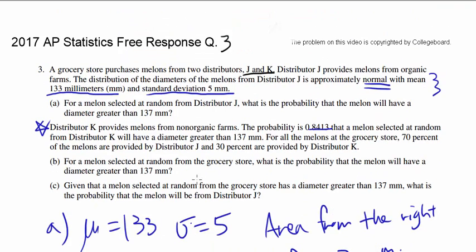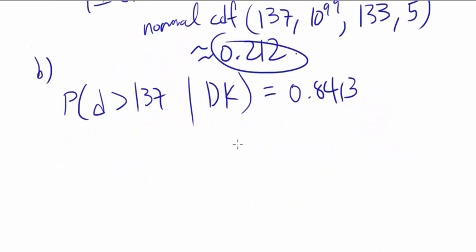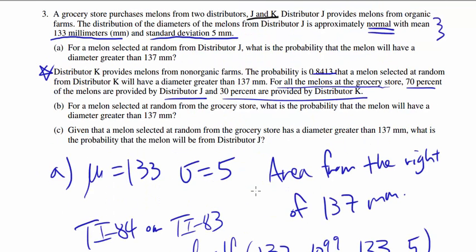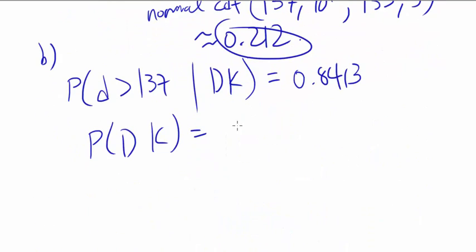And what else do they give you? For all melons for the grocery store, 70% is from J and 30% is from K. So we know distributor K is 0.3 and distributor J is 0.7.